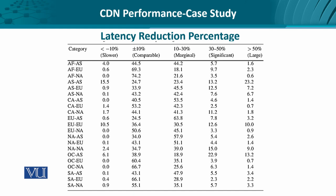The buckets classify latency reduction as follows: less than minus 10% means the indirect path is actually slower than the direct path; around 10% means comparable performance; up to 30% means marginal improvement; 30% to 50% means significant improvement; and more than 50% means the indirect path takes less than half the total time compared to the direct path.